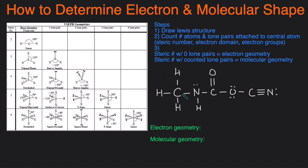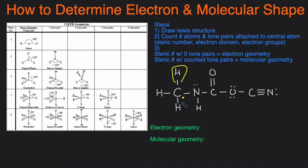So I have this structure drawn here and we're going to determine the electron geometry and the molecular geometry of these particular atoms. We'll start by looking at this carbon right here. The first step is to draw the Lewis structure — we've done that. The second step is to count the number of atoms and lone pairs attached to that particular atom, which is called the steric number, electron domain, or electron groups — these are interchangeable. In our case, the steric number would be 1, 2, 3, 4 — four atoms and no lone pairs, giving us a steric number of 4.